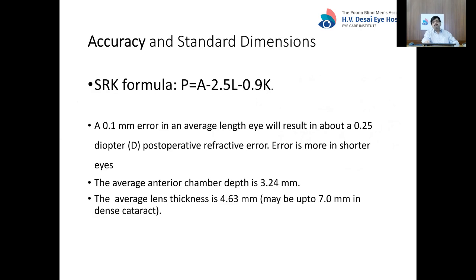Regarding the accuracy of ultrasonic biometry, consider the SRK formula for IOL power calculation: P equals A minus 2.5L minus 0.9K, where P is the IOL power, A is the lens A-constant, L is the axial length in millimeters, and K is the keratometry in diopters. From this formula, an inaccuracy of one millimeter in axial length results in an error of 2.5 diopters in the IOL power. A 0.1 mm error leads to a 0.25 diopter postoperative refractive error. Errors are more significant in shorter eyes.